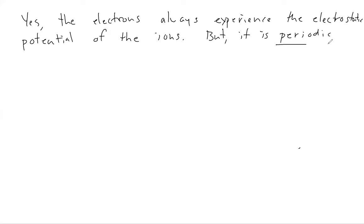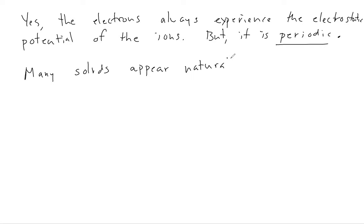The fact that this potential is periodic is really the main reason that we can make any headway, and you'll see that it allows us to make a significant amount of progress attacking this problem. Let's start talking about periodic potentials — this is going to lead us to our discussion of crystal lattices. We'll begin by noticing that many elements that are solid naturally appear in crystalline form. By crystal, we mean some arrangement of atoms that repeats apparently indefinitely.